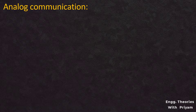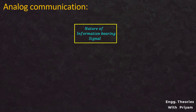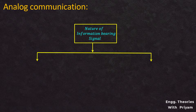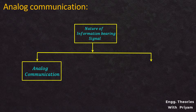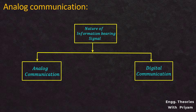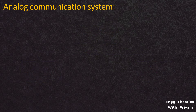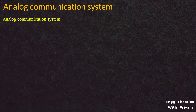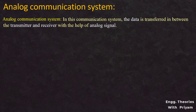As we have seen in the previous lecture, according to the nature of information bearing signal, the communication can be divided into analog communication system and digital communication system. Now let's understand what is analog and digital communication system. In the analog communication system, the data is transferred between the transmitter and the receiver with the help of an analog signal.